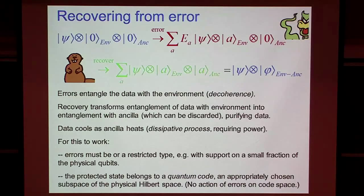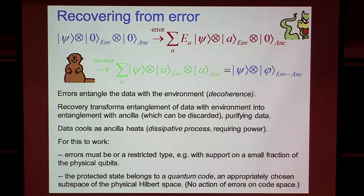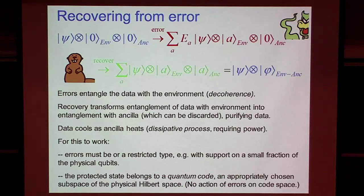Now that won't work for arbitrary interactions between the system and the environment. Normally we're content to consider the noise to be weak and weakly correlated, so the error operators which occur acting on the system with appreciable amplitude act nontrivially on a small fraction of all of the qubits in the system. Even so, we won't be able to protect arbitrary states, but only states in some appropriately chosen code subspace of the full Hilbert space of the system, where that code subspace is chosen so the errors that we wish to be able to reverse act trivially on the protected data.